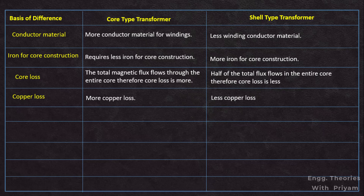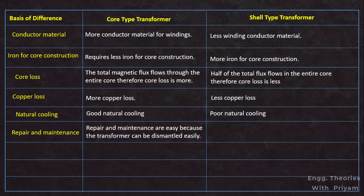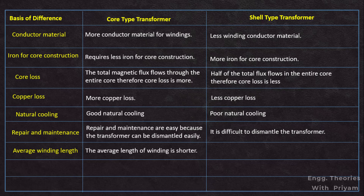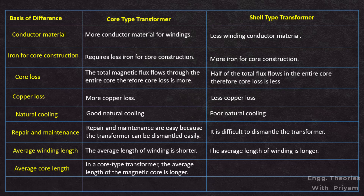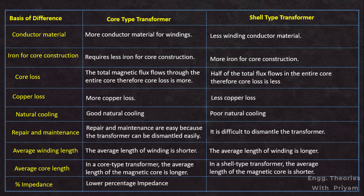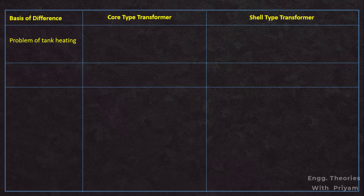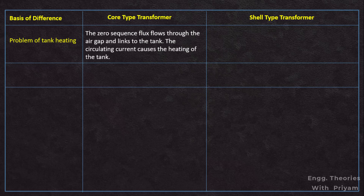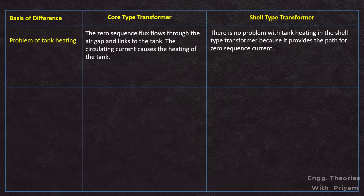The core type transformer provides good natural cooling, while the shell type provides poor natural cooling. Repair and maintenance are easy in the core type transformer because it can be dismantled easily, but it is difficult to dismantle in the shell type. The average winding length for the core type transformer is shorter, and the average cooling duct length is longer; for the shell type, the average winding length is longer and the average cooling duct length is shorter. The core type transformer has lower percentage impedance, while the shell type has higher percentage impedance. Core type transformers are used in high voltage, high power applications, while shell type transformers are used in low voltage, low power applications.